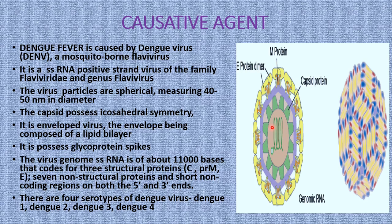The virus genome — a single-stranded RNA — is about 11,000 bases, which codes for three structural proteins: capsid protein, M protein, and E protein. Along with these three structural proteins, it also codes for seven non-structural proteins: NS1, NS2, NS2A, NS2B, NS3, NS4, NS4A, NS4B, and NS5. There is also a short non-coding region on both the 5-prime and 3-prime ends.